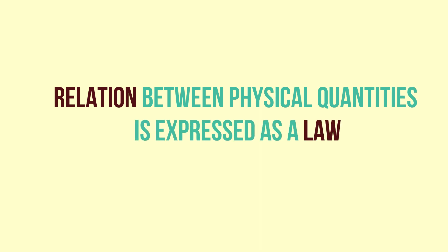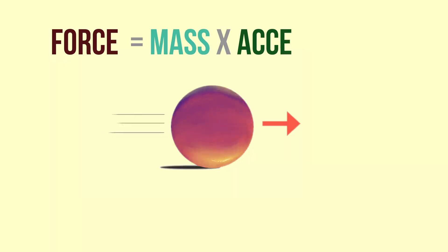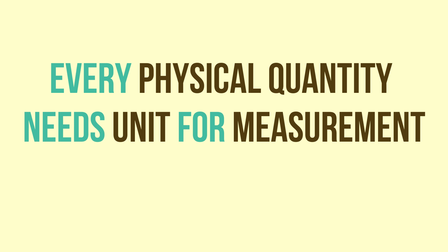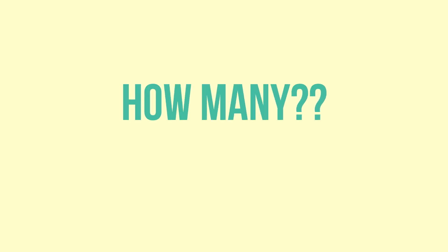Finally they formulate the laws in terms of these physical quantities. For example, Newton explained his laws of motion in terms of force, mass, and acceleration. In short, measurement is an important aspect of physics, and what is more important is we need units to measure these physical quantities. Now the question is how many physical quantities we have in physics.